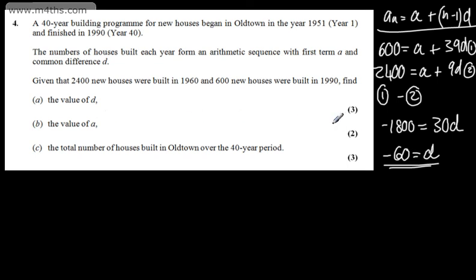In part B, for two marks, we need to find the value of A. We can pick either one of these equations. I'm going to pick equation two. 2400 is equal to A, and then we've got 9 lots of D, which is going to now be subtracting 540. That's 9 times by 60. So we have 2940 is equal to A. So we can say A, the first term, that's the number of houses built in the first year, was 2940.